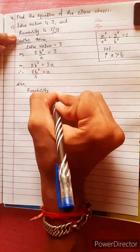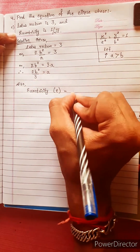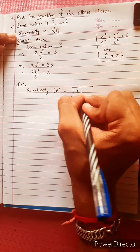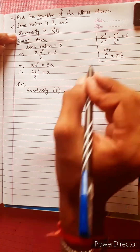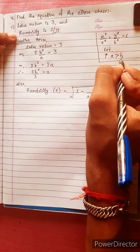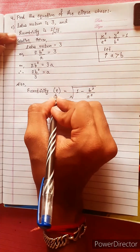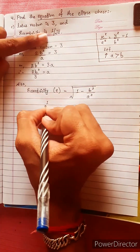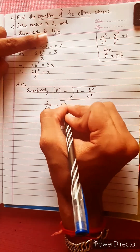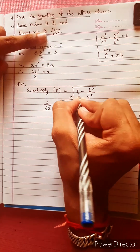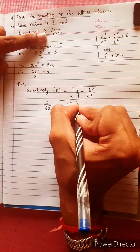Eccentricity e equals 1 by under root 2. When we have a squared, we use the formula: 1 minus b squared by a squared, where a is greater than b. So eccentricity equals 1 by under root 2, which equals under root of a squared minus b squared divided by a squared.